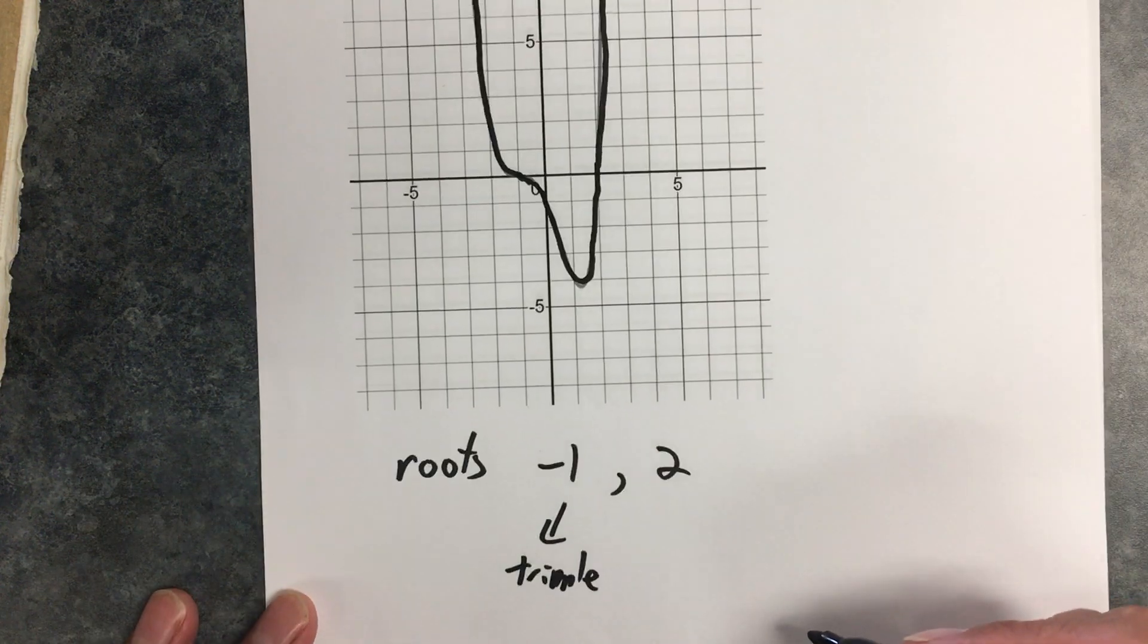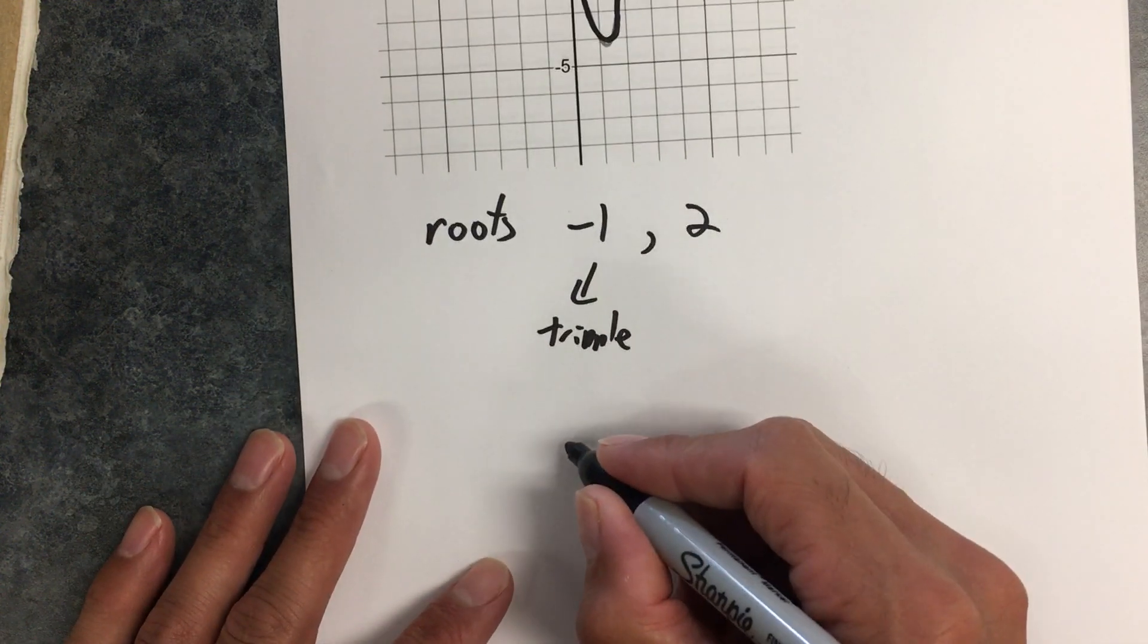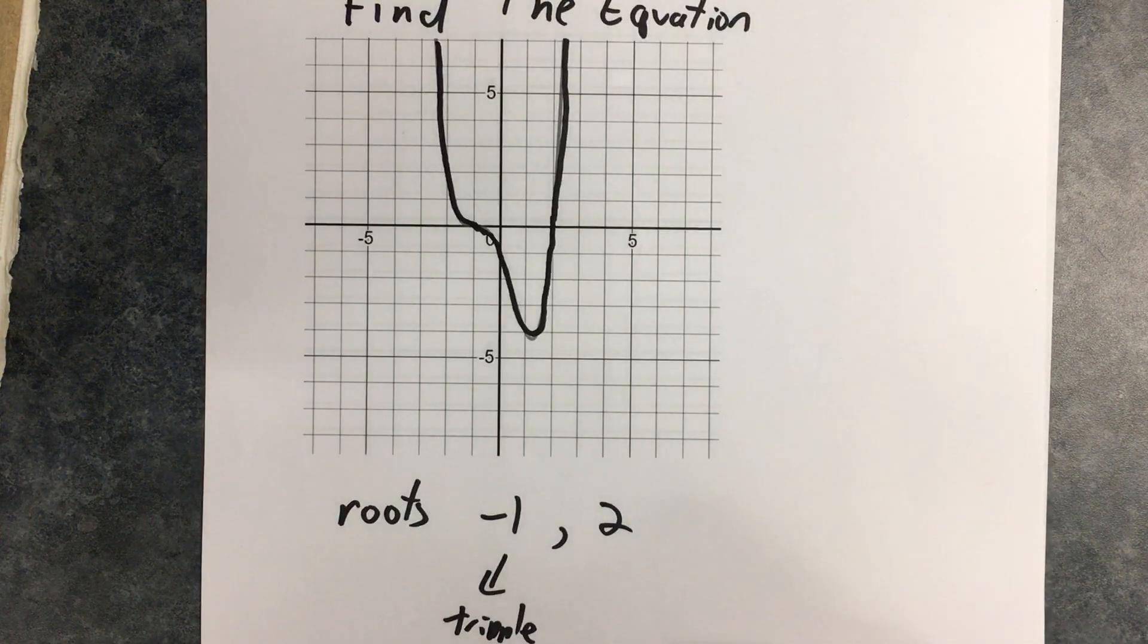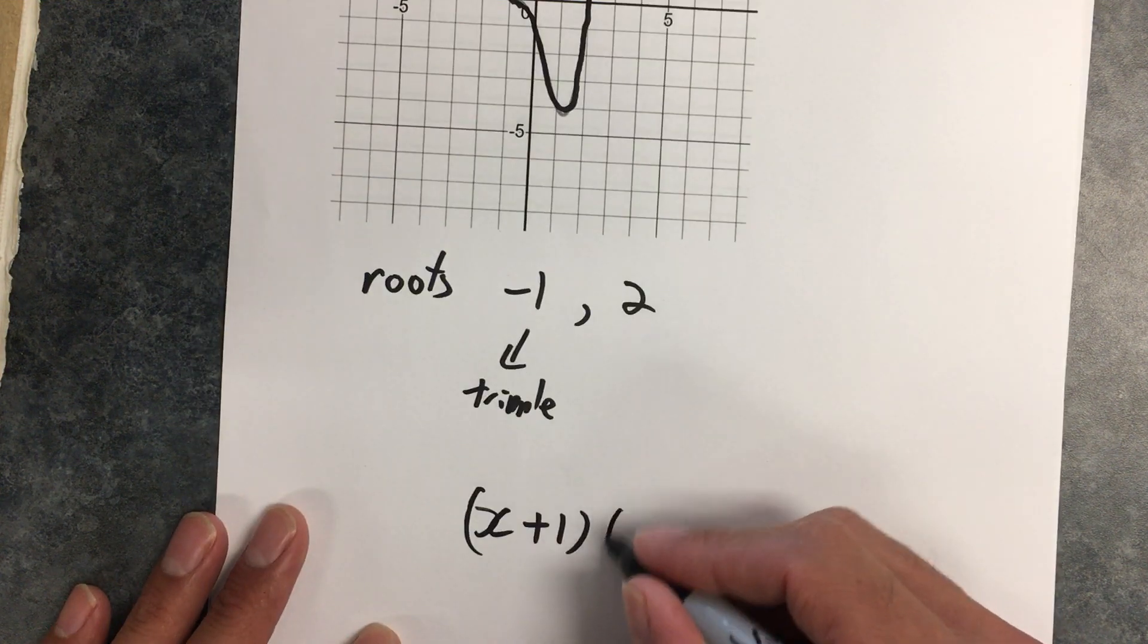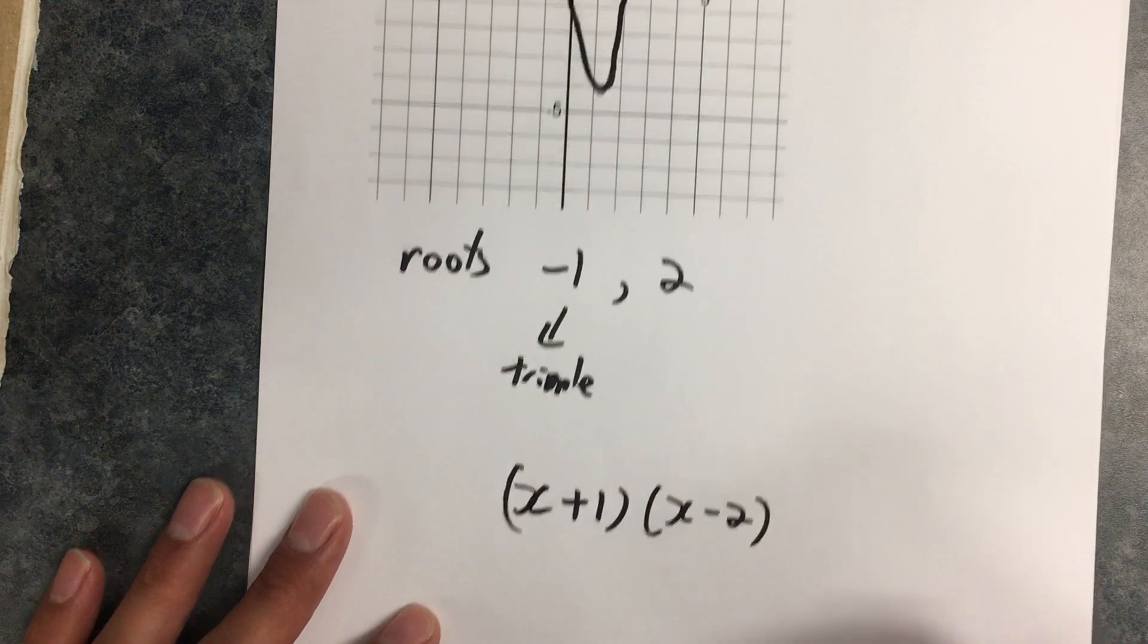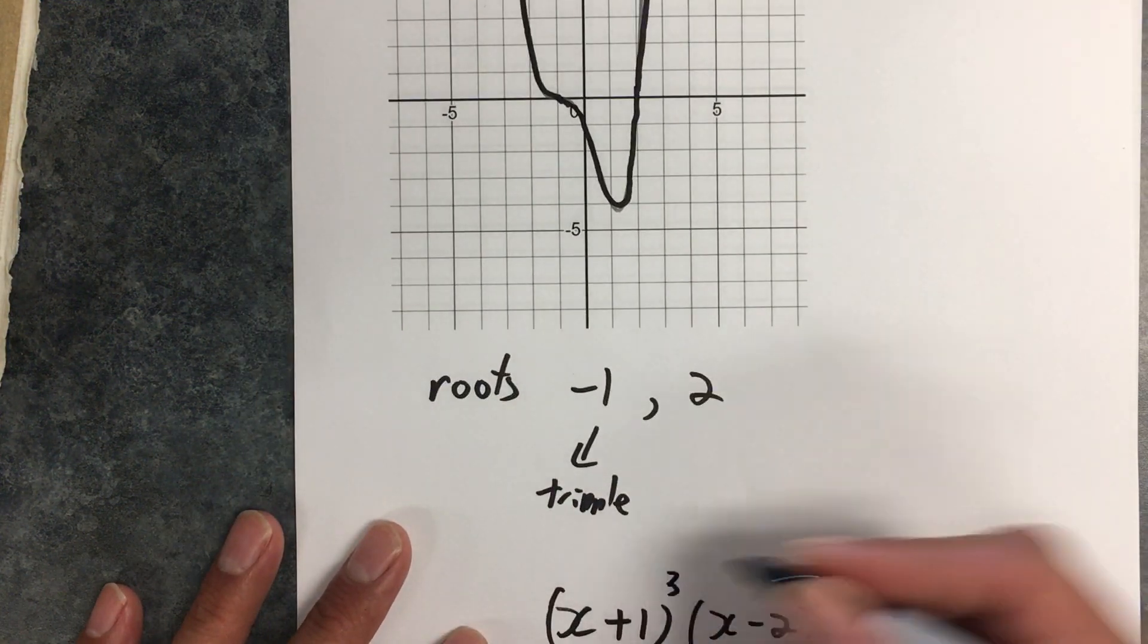So as I go to write down the equation, I'm going to incorporate a root at negative 1. So I'm going to say (x + 1), because this gives me a root at negative 1. A root at positive 2, so I'm going to write (x - 2). And I'm going to account for the fact that that's a triple root by cubing that.